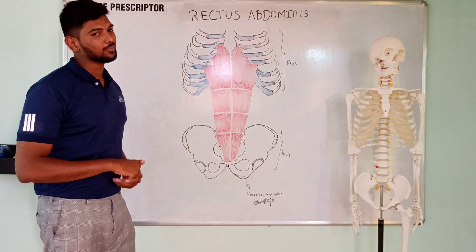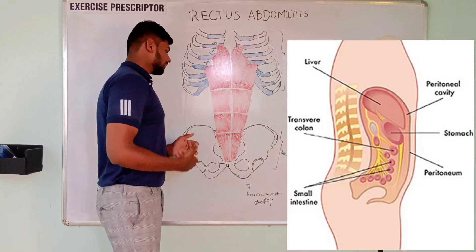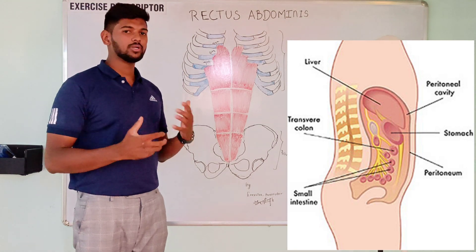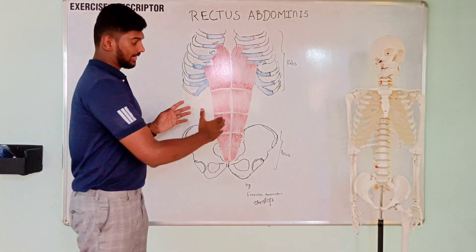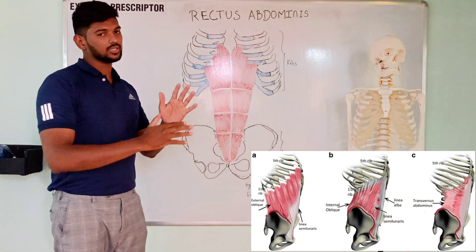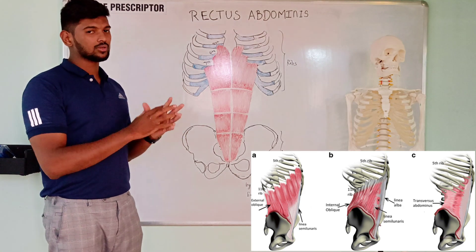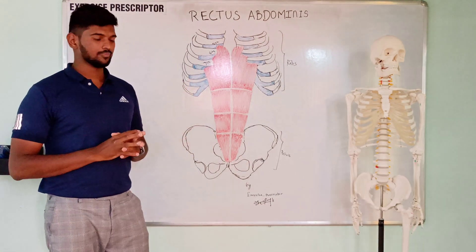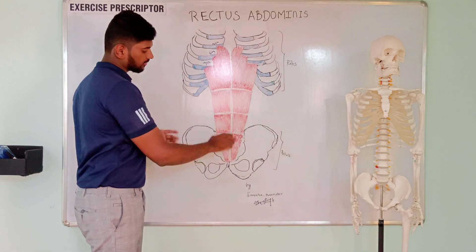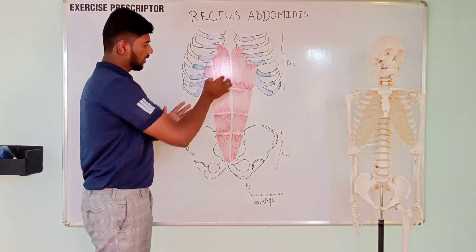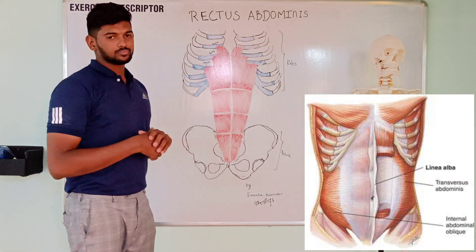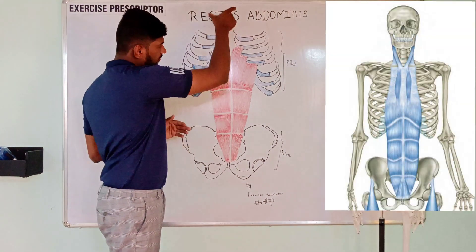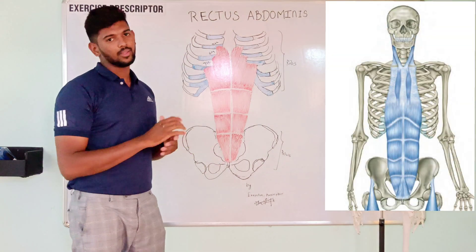Regarding the anatomical relationships of the rectus abdominis: deep to the rectus abdominis muscle lies the peritoneum of the abdominal cavity. Lateral to the rectus abdominis are the three muscles of external oblique, internal oblique, and transverse abdominis. The rectus abdominis also forms part of the superficial myofascial line.